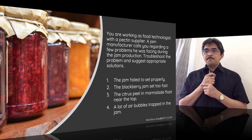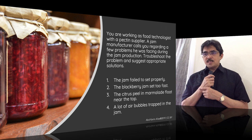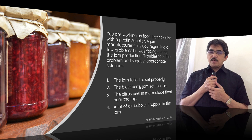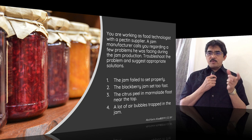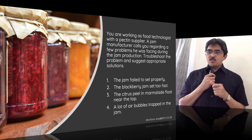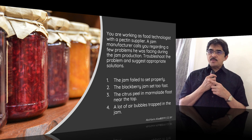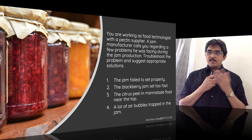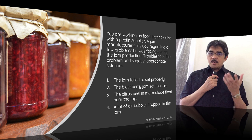Problem 2 — the blackberry jam set too fast. Blackberry is a high-acid fruit with a very low pH, probably around 2-point-something. When the pH is very low and we use high methoxyl pectin, the jam will set very fast, which causes processing problems. If we don't want the jam to set too fast, we need to use a slow-set pectin to allow sufficient time for dispensing. This is especially important for low-pH or high-acid fruits when making jam.